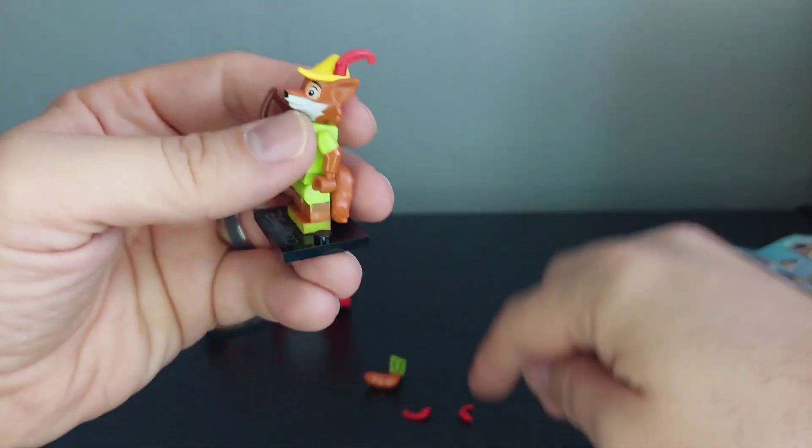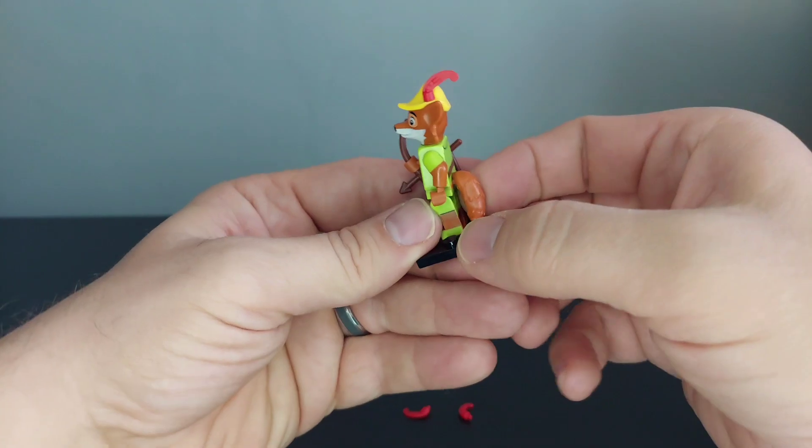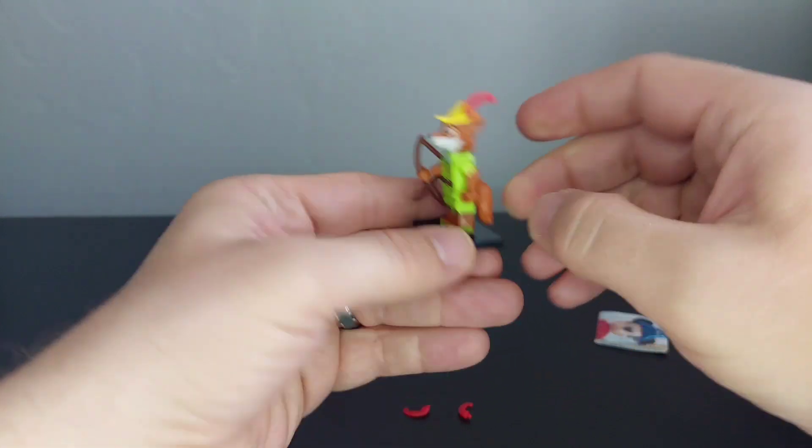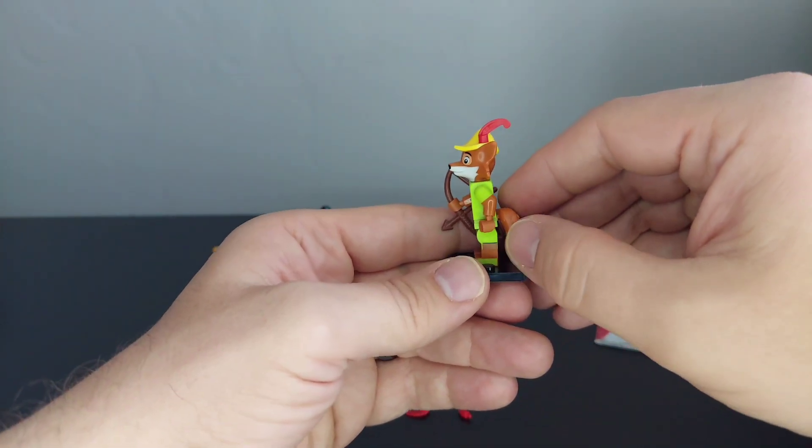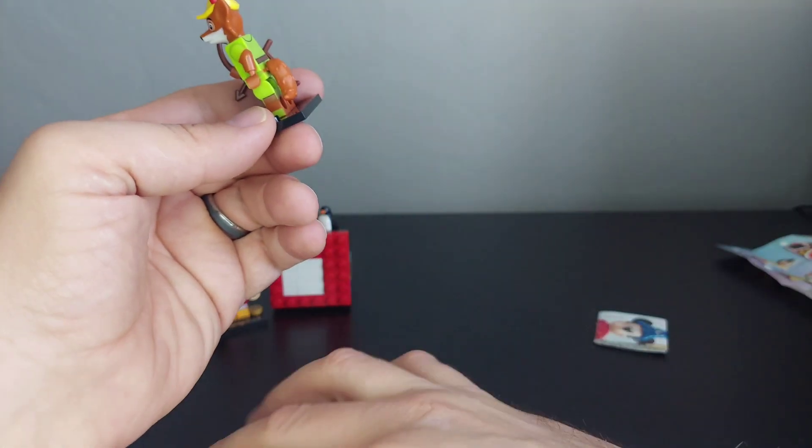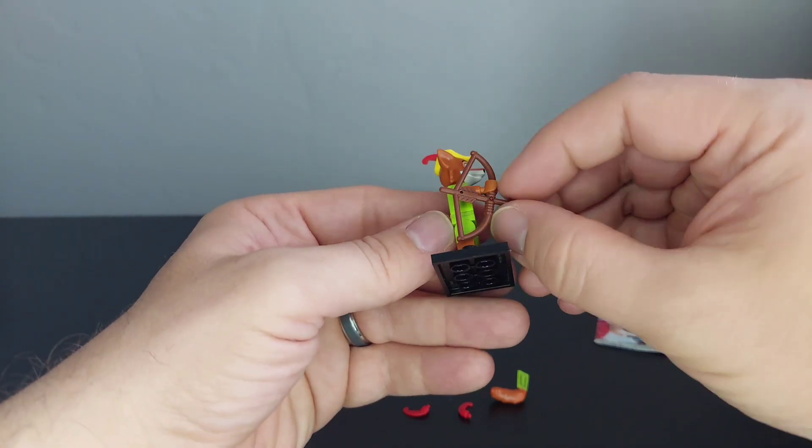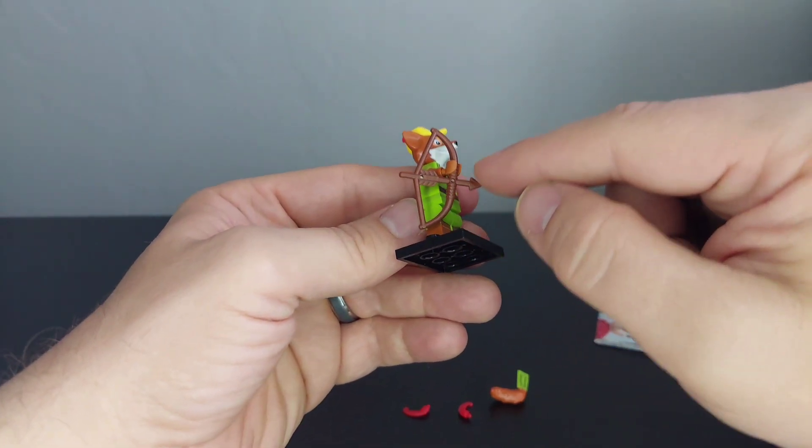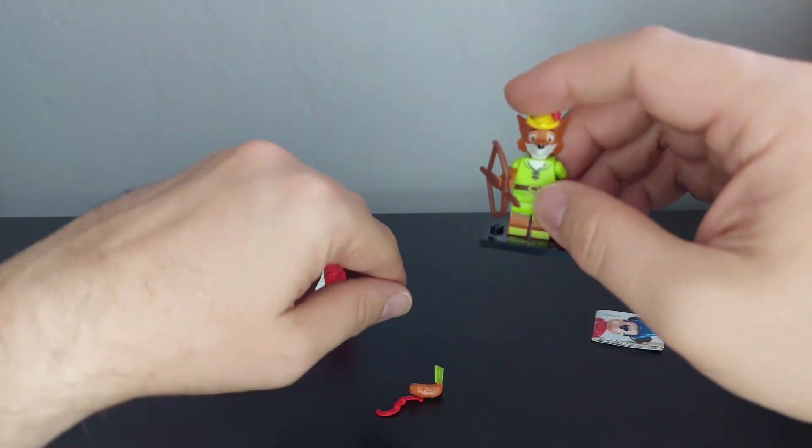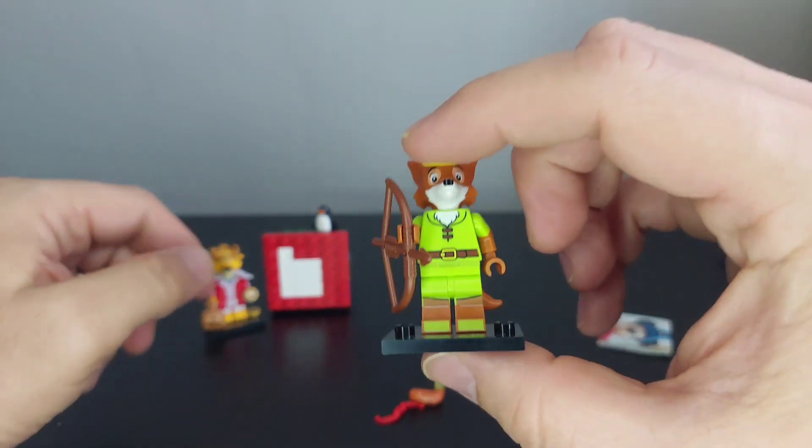The tail - this is the only minifigure that has a tail in this series. The tail's kind of squishy and apparently you get two of them. But also the bow - this is how I confirmed when I was feeling for it. The bow is the only set that has a bow in the whole series 3 Disney minifigures.